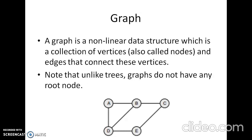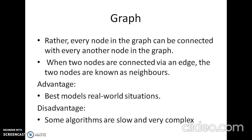The next non-linear data structure is a graph. It is a collection of vertices, called nodes, and edges that connect these vertices. A graph is often viewed as a generalization of a tree structure where instead of a purely parent-to-child relationship between nodes, any kind of complex relationship between the nodes can exist. In a tree structure, a node can have any number of children but only one parent. A graph relaxes all such restrictions. Unlike a tree, graphs do not have any root node. Every node in the graph can be connected with every other node. When two nodes are connected via an edge, the two nodes are known as neighbors.